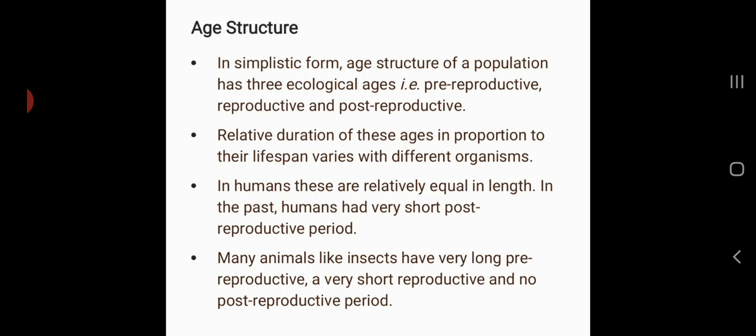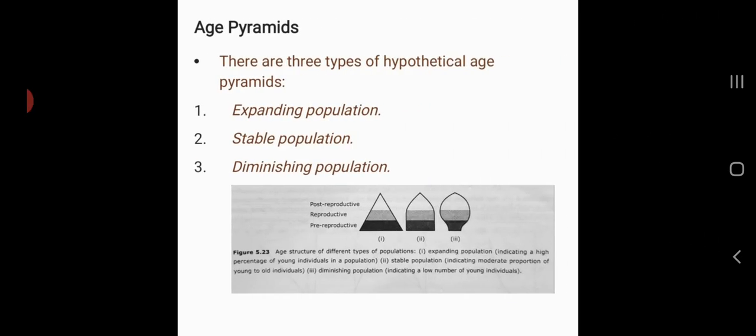There are three types of age pyramids: expanding, stable, and diminishing. In an expanding population, the number of young individuals is more due to high birth rate, so it is a rapidly growing population and a pyramid-shaped age structure is formed.